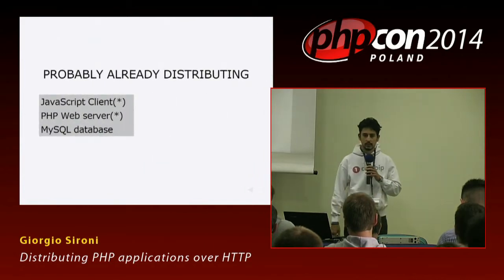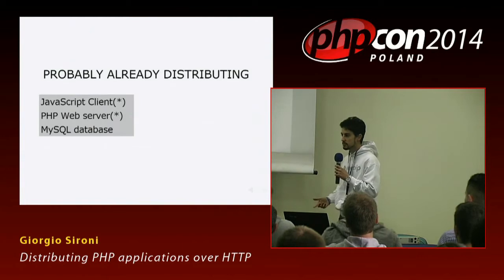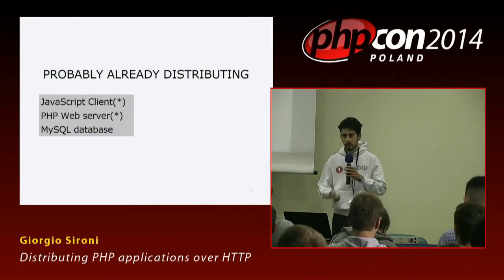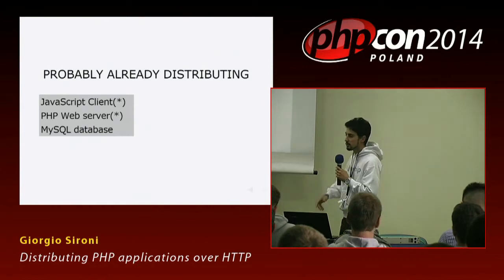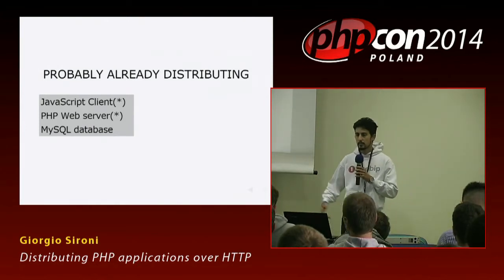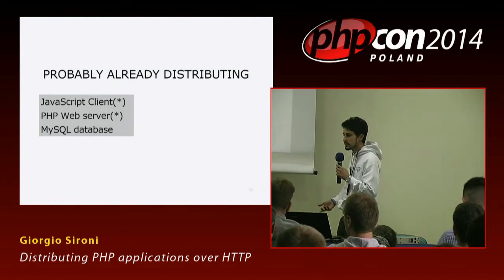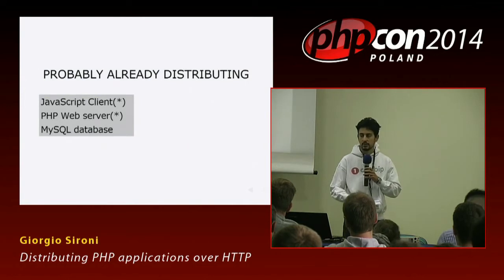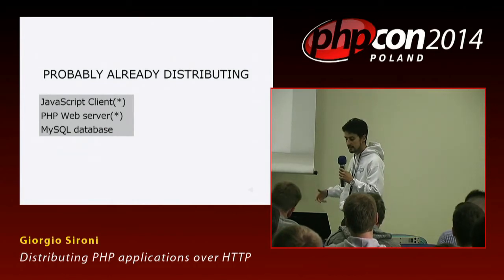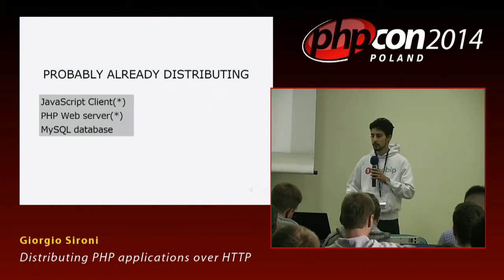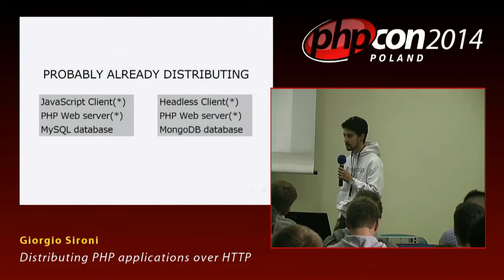I talk about distributed applications, but you are probably already distributing your applications horizontally. Your PHP front-end runs on several machines. Your database is commonly placed on another machine in the same local network, maybe with a secondary database as a backup. And if you execute JavaScript code, it is shipped to the machine of the user, possibly hundreds or thousands of kilometers away. So you are already distributing work over multiple machines and possibly multiple countries. The kind of distribution I'm talking about today is vertical, not horizontal.